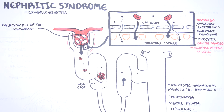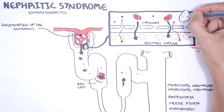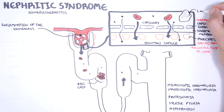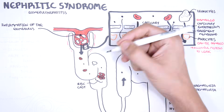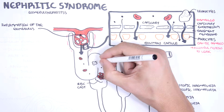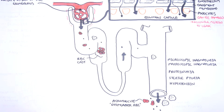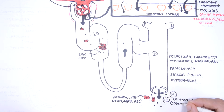Due to inflammation in the glomerulus, white blood cells such as neutrophils are usually recruited to the area and can also leak through the capillaries, causing pyuria, which is sterile because there is no infection.